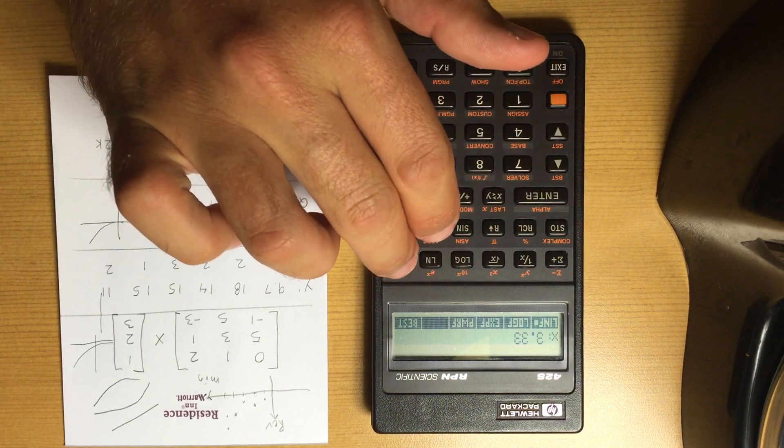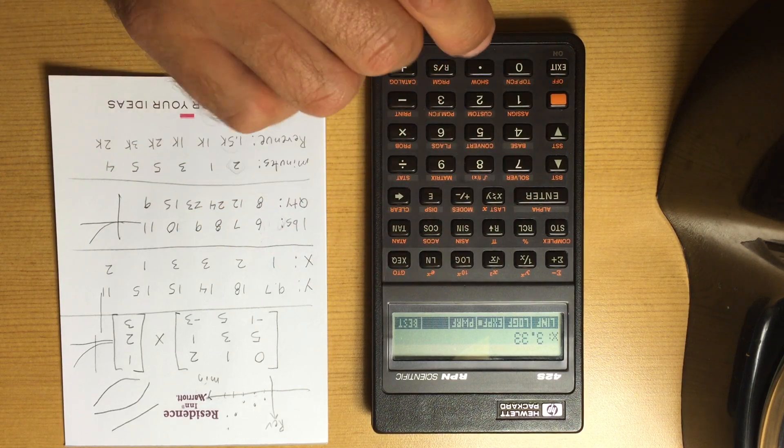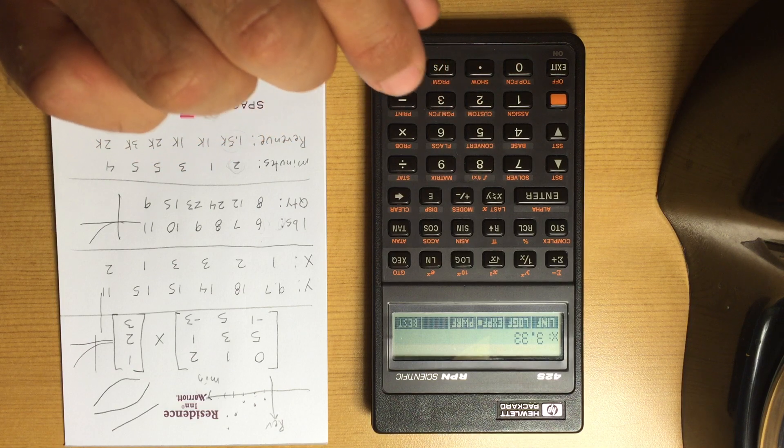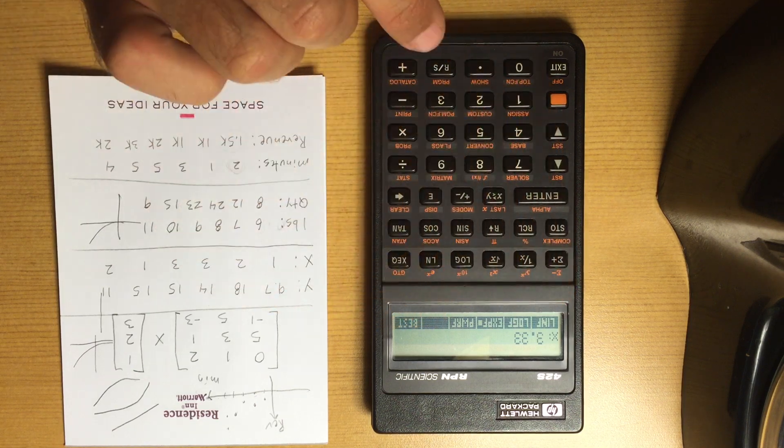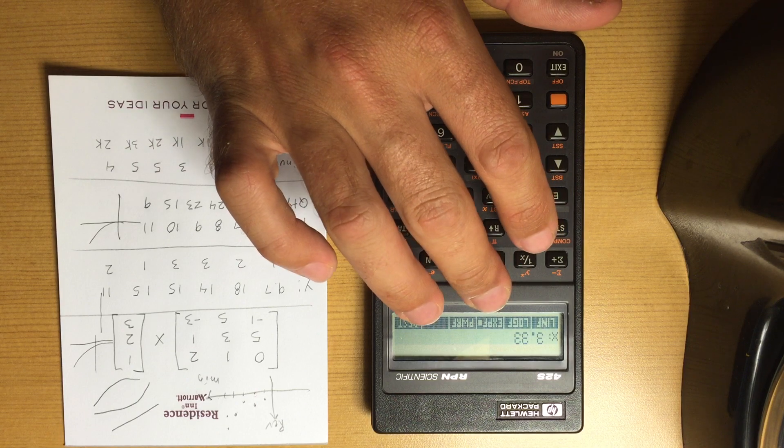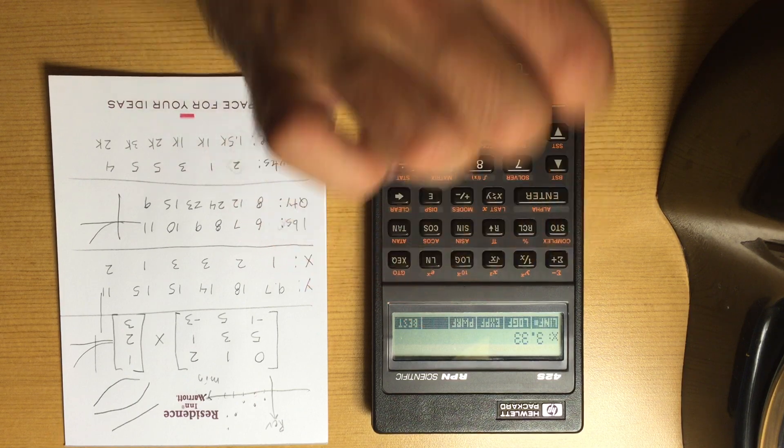Or you can choose 'best,' and 'best' tries to find which one of these has the best correlation to the data that's given. So it shows the exponential, and I'm going to go ahead and pick linear.